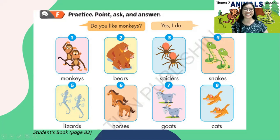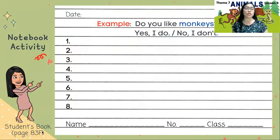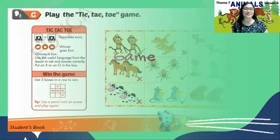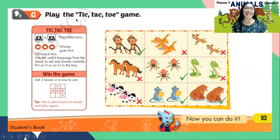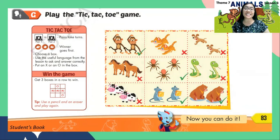Now it's time for you to practice, and after that you're going to write it in your notebook. You will answer yes, I do or no, I don't — it's up to you. It's game time! Page 83, letter G: Play the tic-tac-toe game. Pairs take turns; winner goes first. Choose a box and use the useful language from the lesson to ask and answer correctly. Put an X or an O in the box to win. Get three boxes in a row to win.